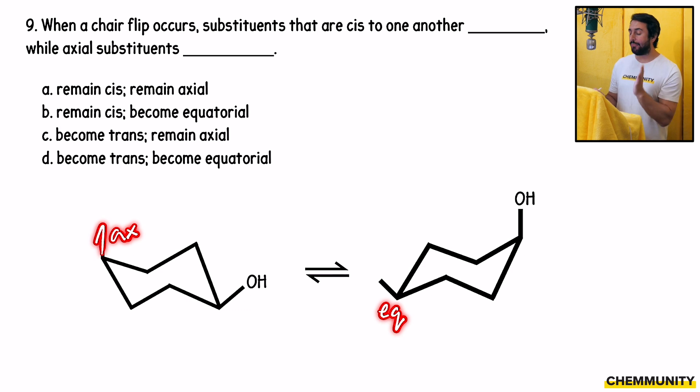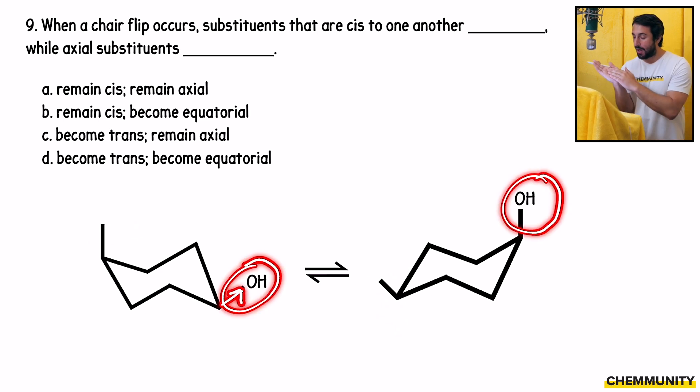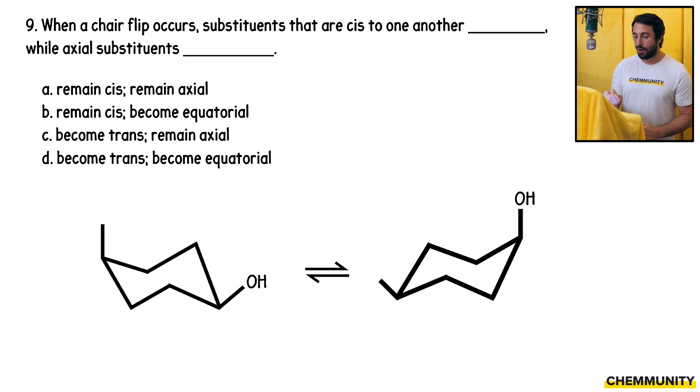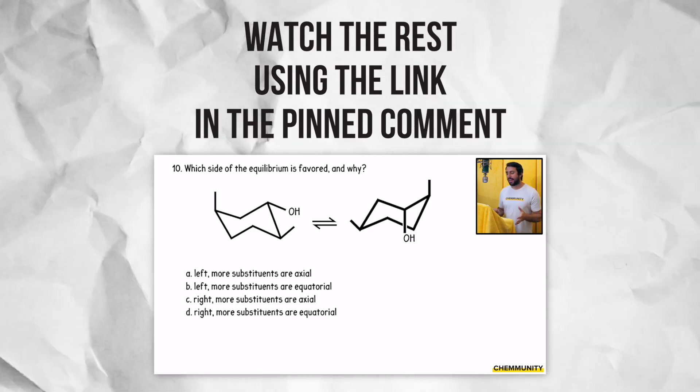It is still pointing up from the ring, but axial becomes equatorial, and then the hydroxyl equatorial there becomes axial. Again, still pointing up, but when that chair flips, it gets pushed into the axial position. The answer we are looking for is that the substituents that are cis to one another remain cis, but axial substituents become equatorial. So that is going to be option B.